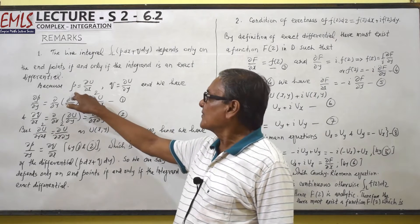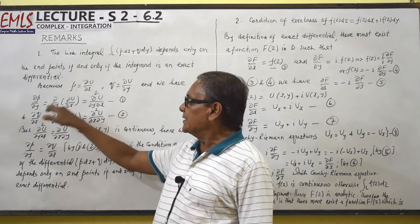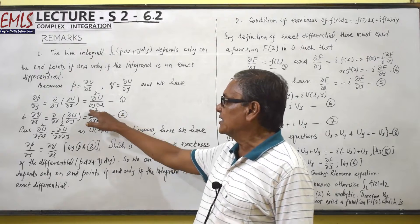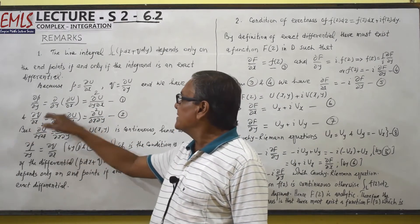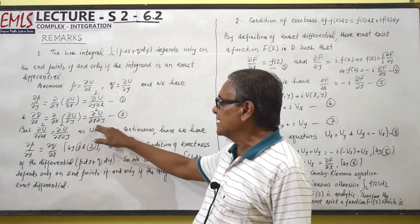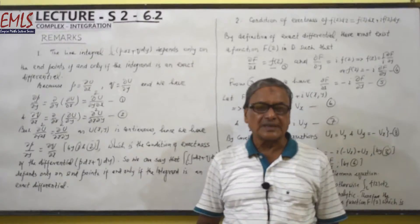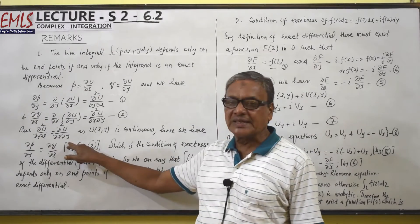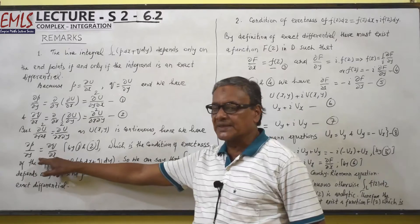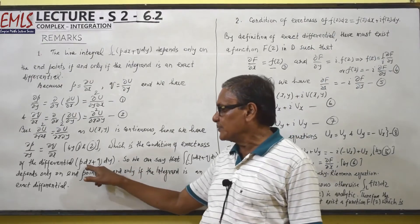Because p equals ∂u/∂x and q equals ∂u/∂y, we have ∂p/∂y equal to ∂/∂y of ∂u/∂x, which equals ∂²u/∂y∂x (equation 1). And ∂q/∂x equals ∂/∂x of ∂u/∂y, which equals ∂²u/∂x∂y (equation 2). These two second-order partial derivatives are equal — ∂²u/∂y∂x equals ∂²u/∂x∂y — since u(x,y) is continuous. Hence we have ∂p/∂y equal to ∂q/∂x by equations 1 and 2, which is the condition of exactness of the differential p dx plus q dy.